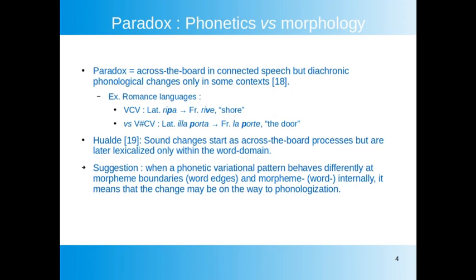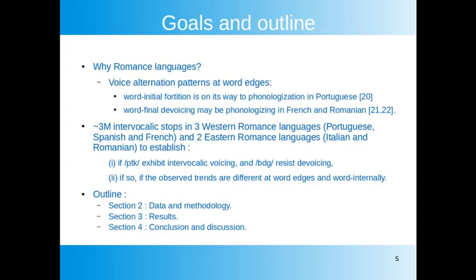Walde proposes that sound changes start as across-the-board processes but are later phonologized only within the word domain. We build on this proposal to suggest that when a phonetic variational pattern behaves differently at morpheme boundaries — in our case word edges — versus morpheme-internally, it means that the change may be on the way to phonologization. In the present study we aim to contribute to the current state of knowledge on intervocalic voicing in Romance languages.